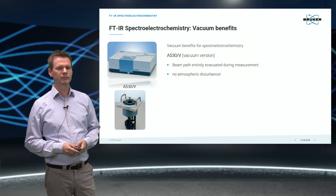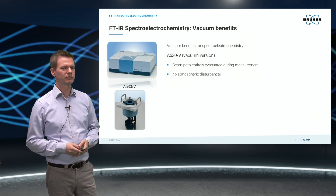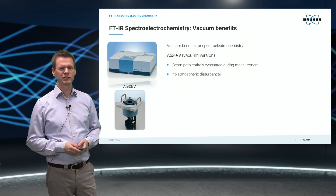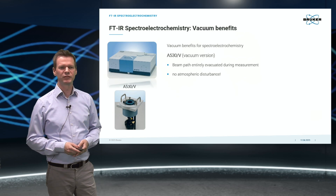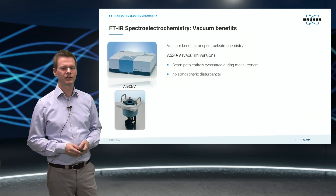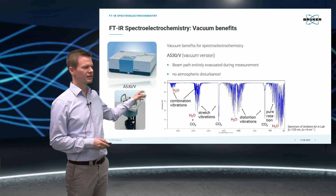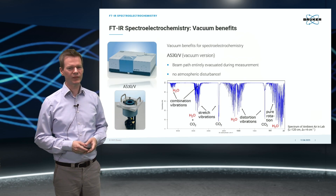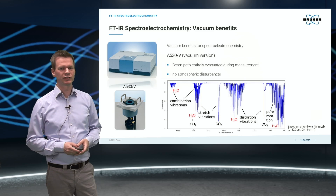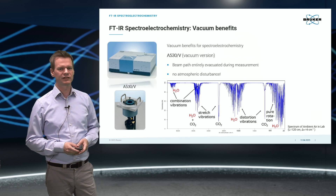Performing experiments on a vacuum FTIR spectrometer gives you big advantages, because the complete beam path will stay under vacuum conditions and no ambient atmosphere will interfere with the IR light. This means the resulting spectra will be free from disturbance of atmospheric carbon dioxide or water vapor, as depicted in the spectrum shown here. This is especially important for organic oxidation reactions where carbon dioxide is a reaction product.